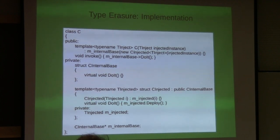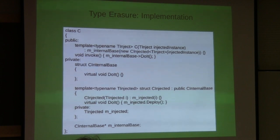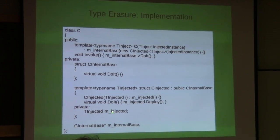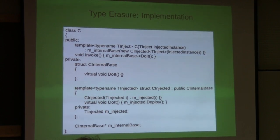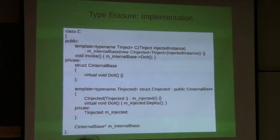Here's the magic. The secret for type erasure is that you have a C_internal_base, a base class, with a virtual method which I'll call do_it. This virtual method does nothing. Then we derive from this class - a templated class that is templated on T_injected. It derives from C_internal_base and stores an instance of T_injected. One limitation of type erasure, at least back in 2008, is that the injected class instance must be copyable, because we're making a copy right here.